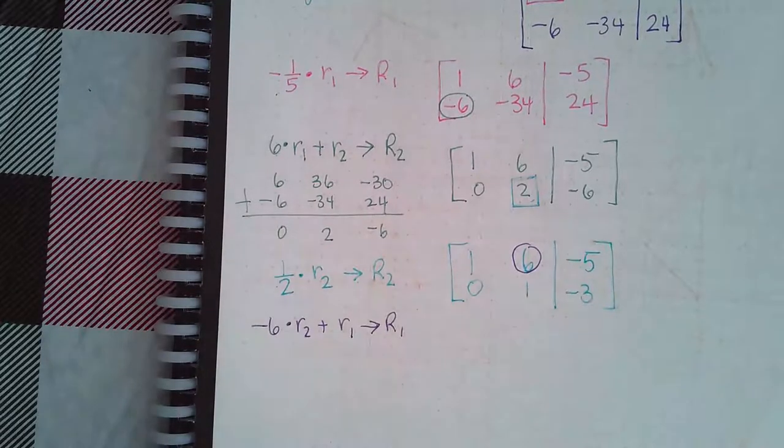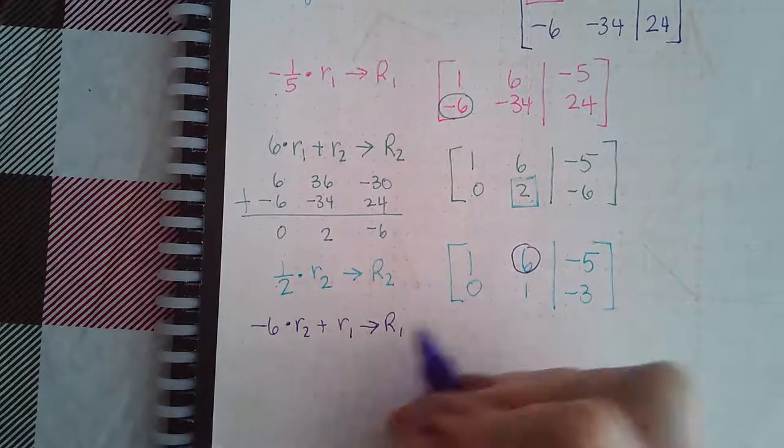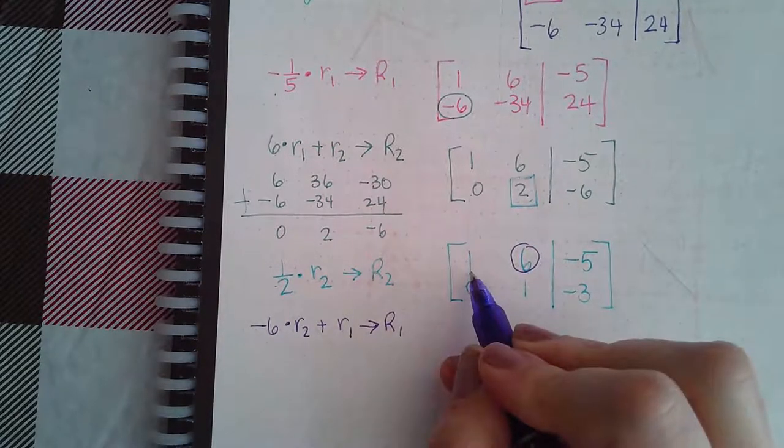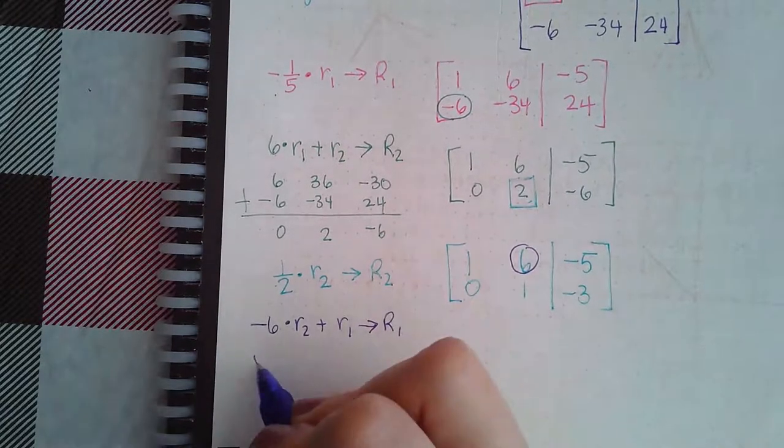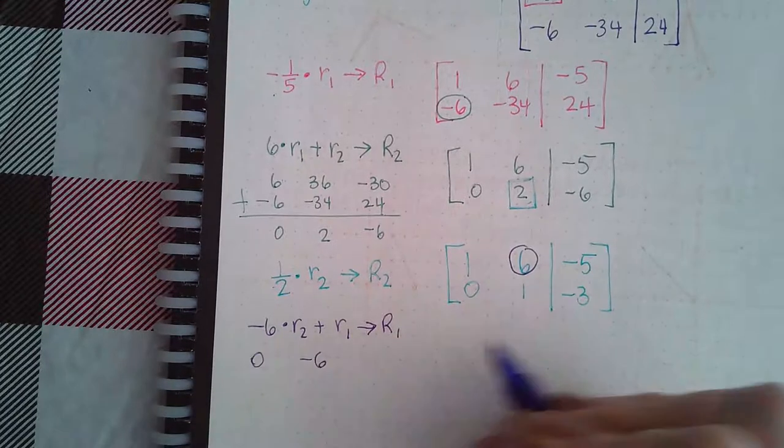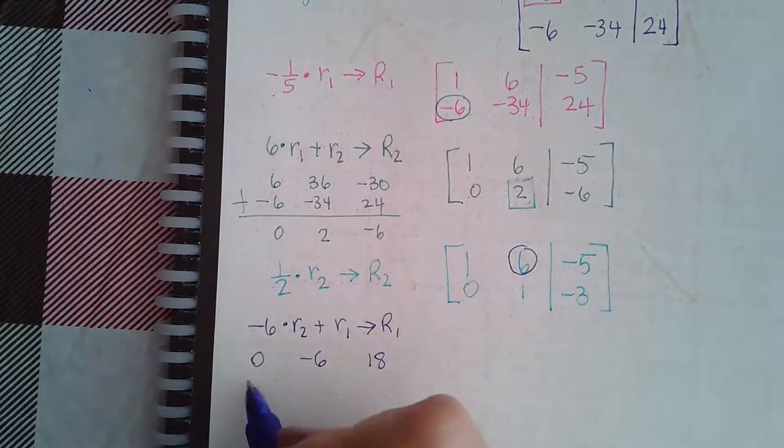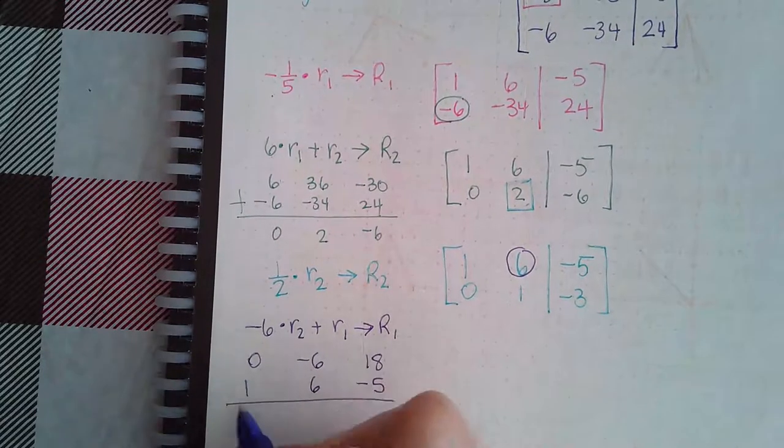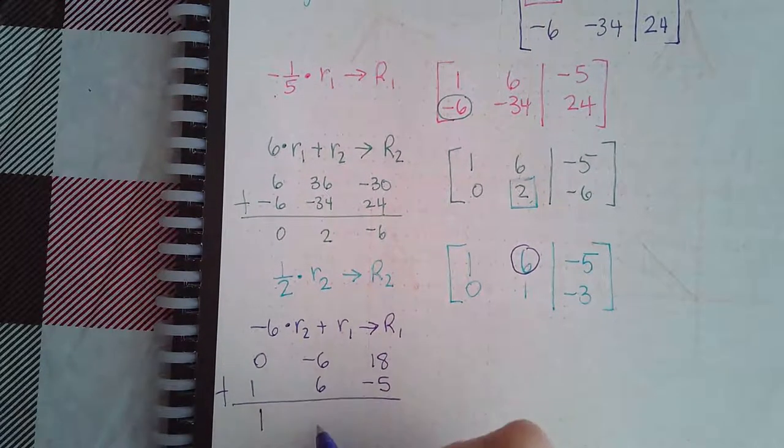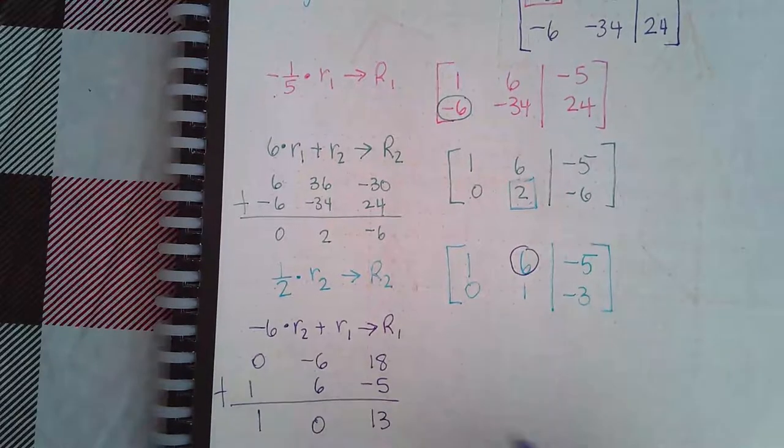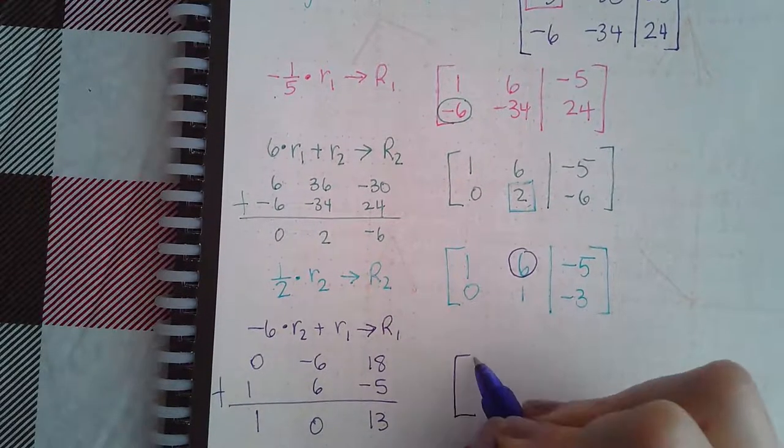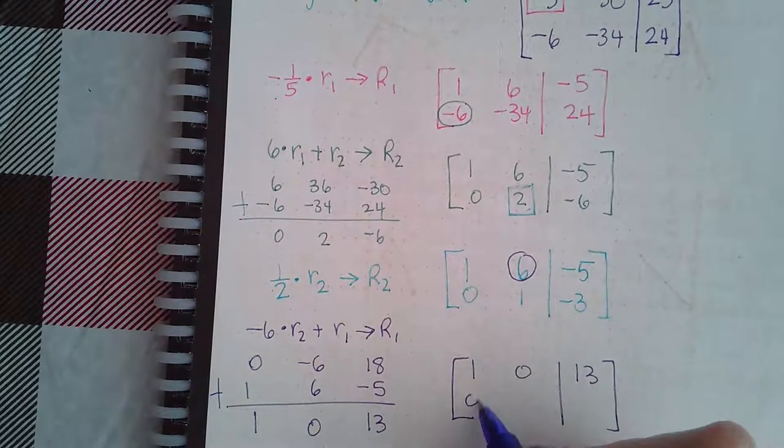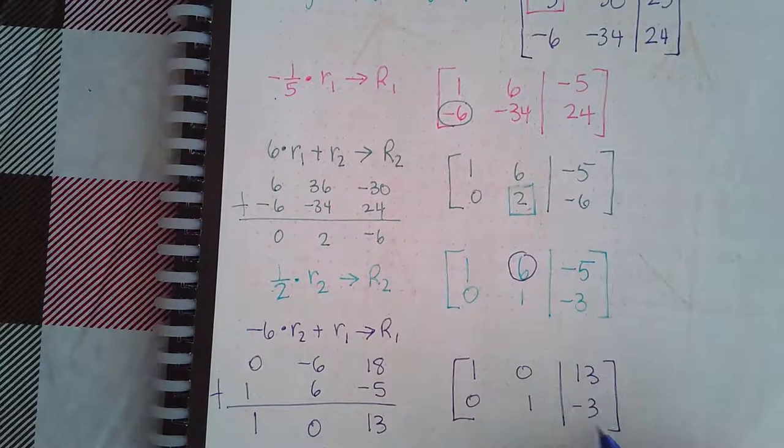So, I'm going to do, let's see, negative 6 times 0 is 0. That will become negative 6. That will become positive 18. Row 1 goes directly underneath it. And then, I combine them together. So, I get 1, 0, and 13. So, row 1 becomes 1, 0, and 13. Row 2 is not changing, so it will stay exactly the same.